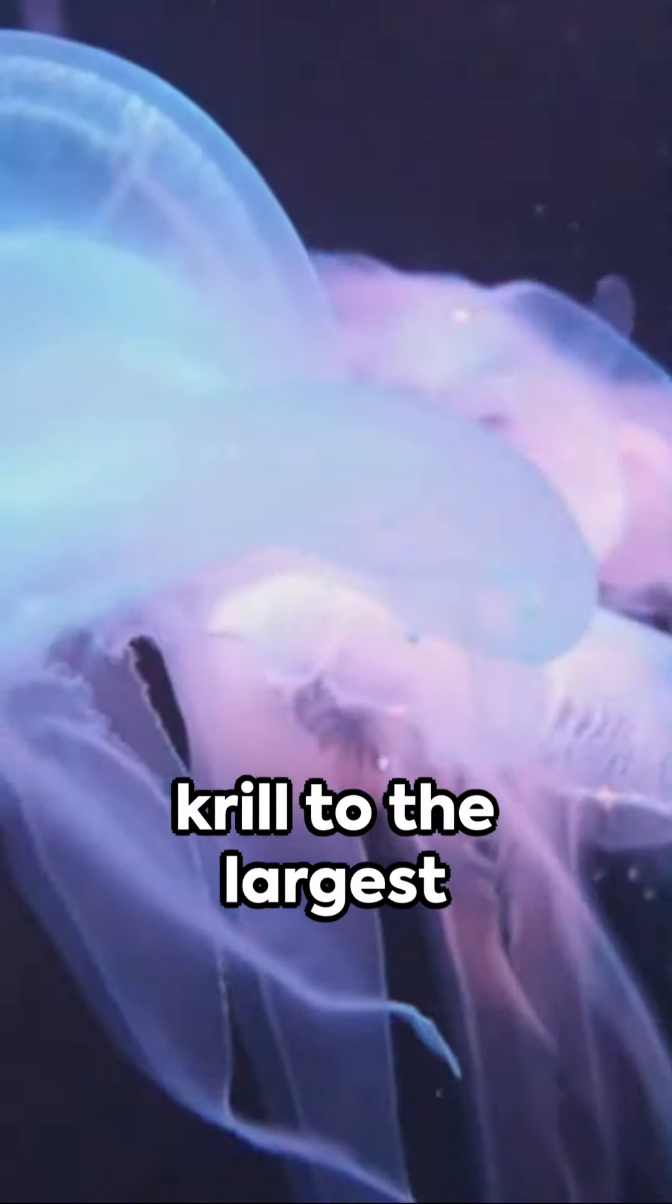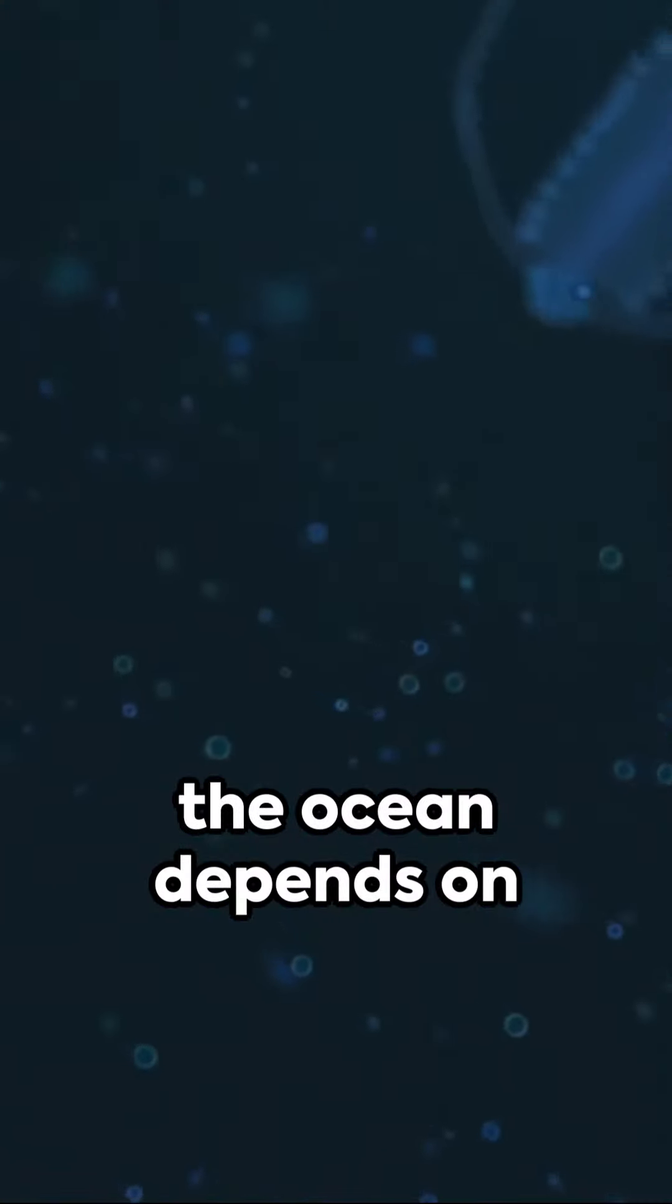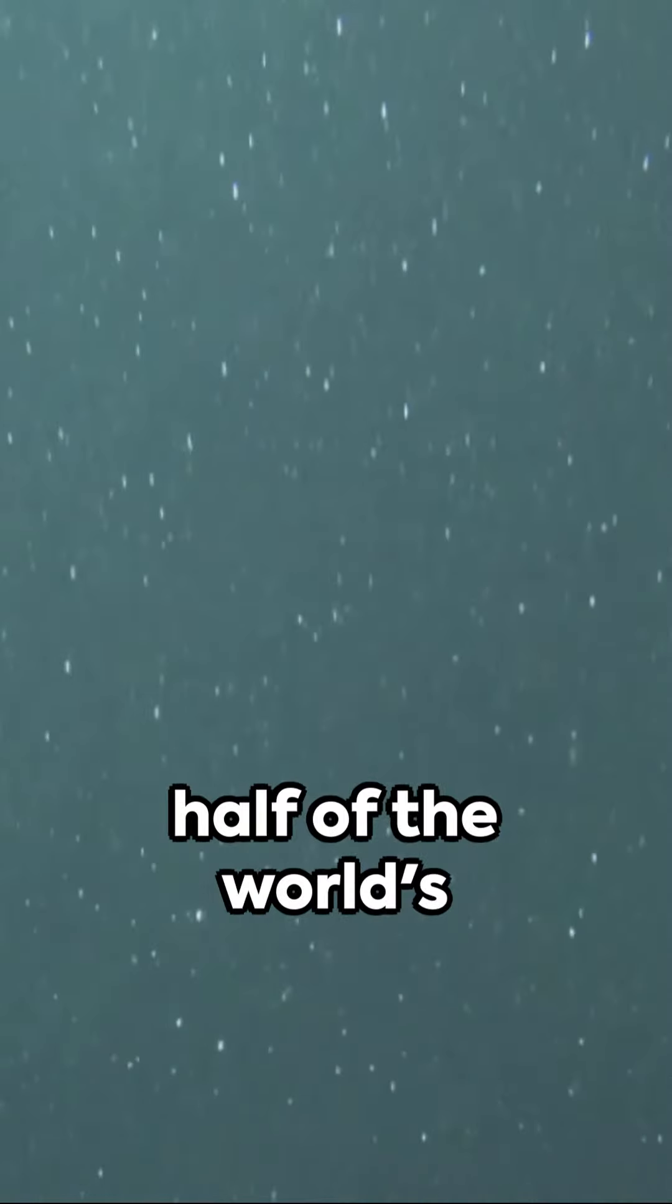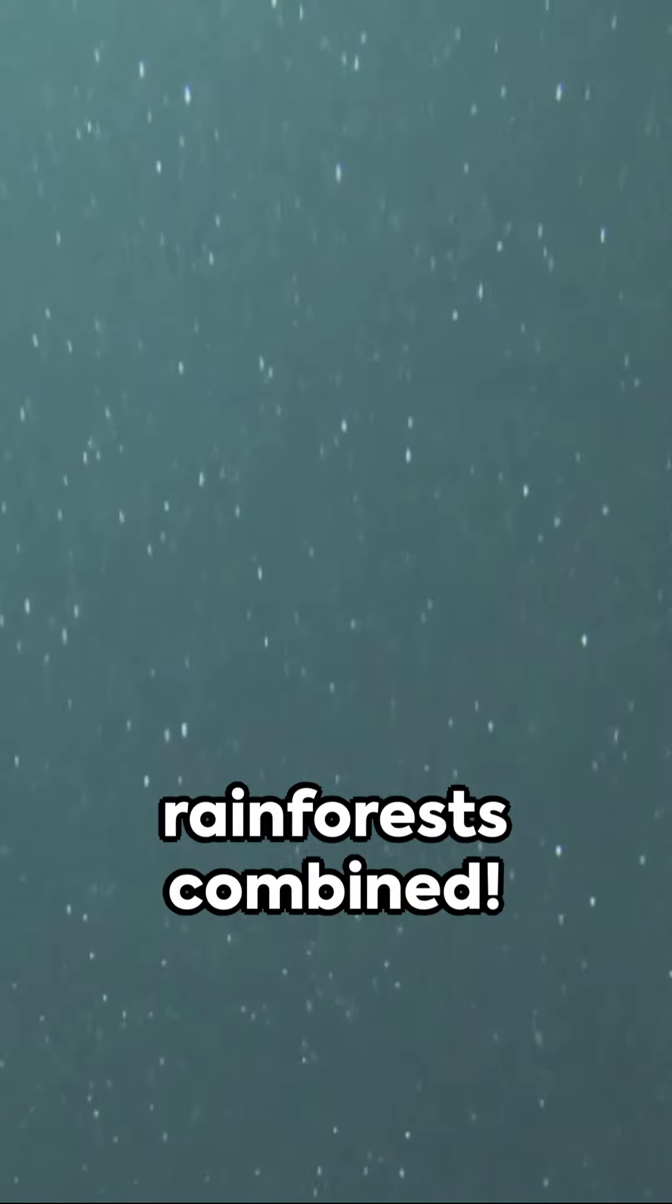From the smallest krill to the largest blue whale, life in the ocean depends on these tiny drifters. Did you know that plankton produce over half of the world's oxygen? That's more than all the rainforests combined.